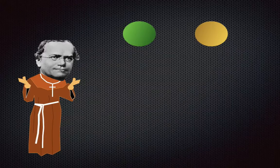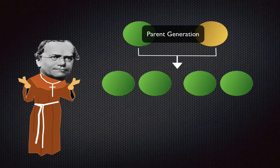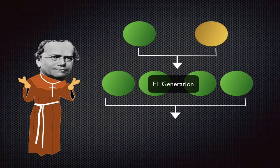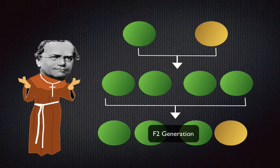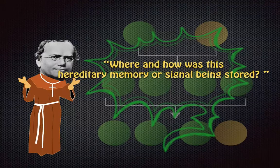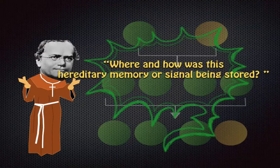For example, when he pollinated a green pea with a yellow pea, he noticed that in the next generation the yellow characteristic was gone. And he wondered what happened to it. As he continued to grow these peas, he realized that in the next generation the yellow characteristic would come back. So the big question he asked was: where and how was this hereditary memory or signal being stored?